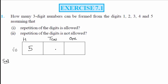For the 10's place, because repetition is allowed, if you have any number already used, you can use it again. So you can make 125 different types of 3-digit numbers.